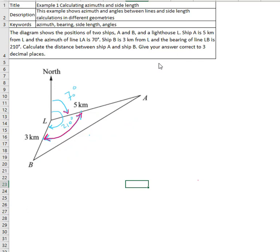So again, the azimuth of line LA is 70 degrees and the azimuth of line LB is 210 degrees. So the angle between them, it is the angle to the right, so we have angle ALB equals 210 degrees minus 70 degrees, and this will lead to an angle of 140 degrees.